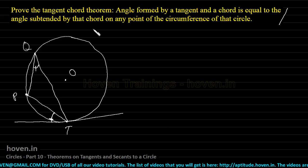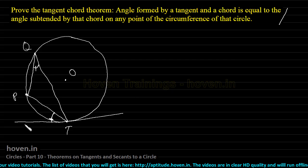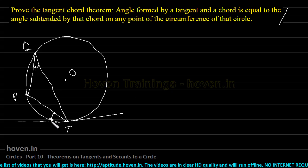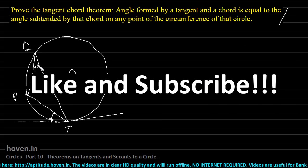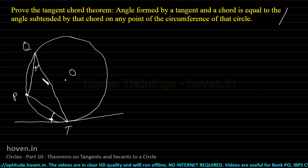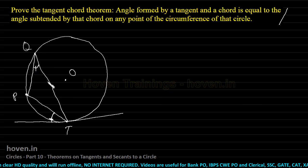This theorem is very commonly called the Tangent Chord Theorem. An exam question could be: a chord and a tangent form an angle of 50 degrees — what is the angle subtended by that chord on the circumference? The answer is immediate: if the tangent-chord angle is 50, then the inscribed angle is also 50.